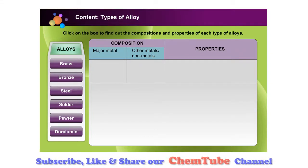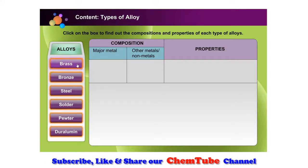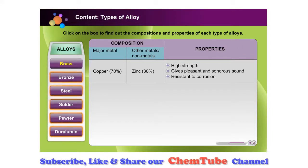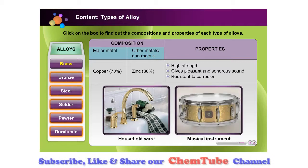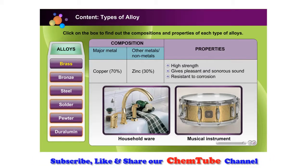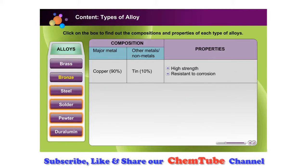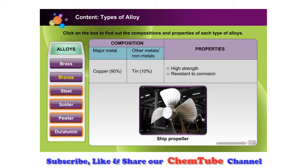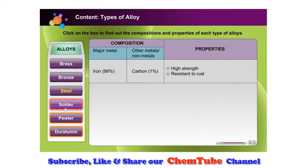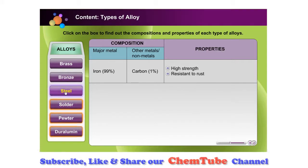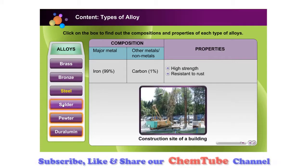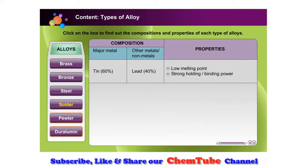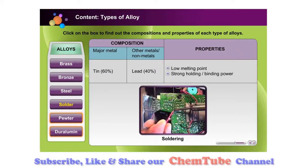Click on the box to find out the compositions and properties for each type of alloy. Brass is harder and stronger than copper, so it is suitable for household wear and musical instruments. Bronze is more resistant to corrosion compared to copper and is used to make ship propellers. Steel is stronger than iron, so steel is used to make the framework of bridges and buildings. Solder has a lower melting point than tin and is useful when soldering or fusing two wires in an electric circuit together.